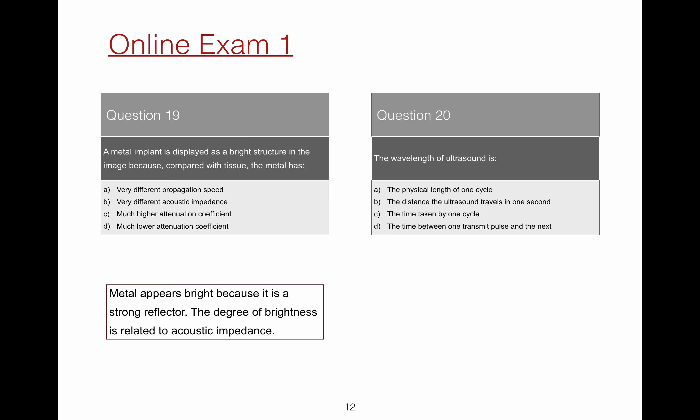Question 20. The wavelength of ultrasound is described how? Well, as the name suggests, the wavelength is the physical length of one cycle. Shown on this diagram as being from one peak to the next peak.